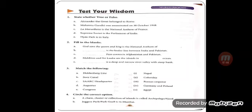Fill in the blanks. 'God Save the Queen and King' is the national anthem of the UK — United Kingdom. Second: the Radcliffe Line is the border line between India and Pakistan. Third: Khyber Pass connects Afghanistan and Pakistan. Fourth: Maldives and Sri Lanka are the islands in the Indian Ocean. Fifth: a canyon is a deep and narrow river valley with steep banks.